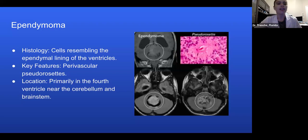We have ependymoma. These cells resemble the ependymal lining of the ventricles. Key features include perivascular pseudorosettes, shown here on the right, and they're primarily located near the fourth ventricle in the cerebellum and brainstem area.